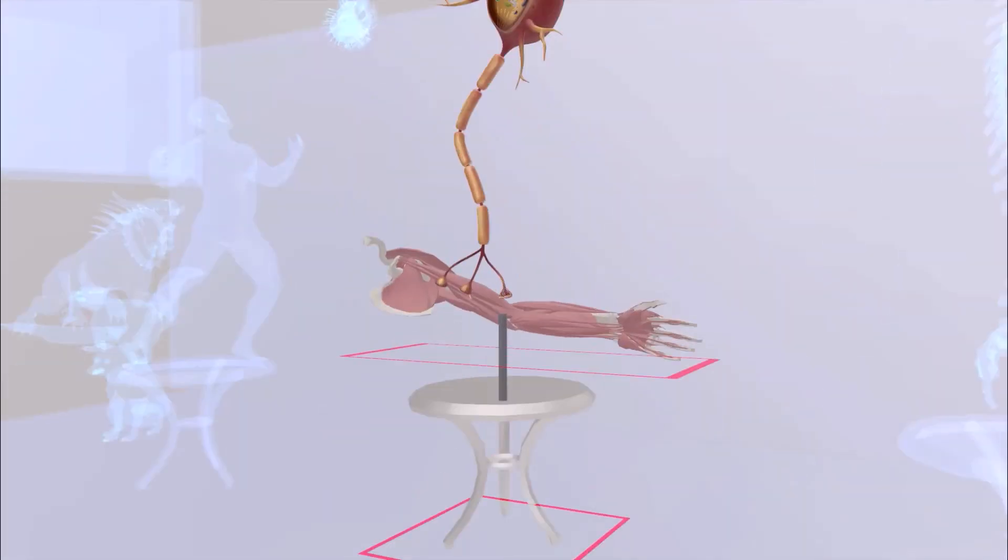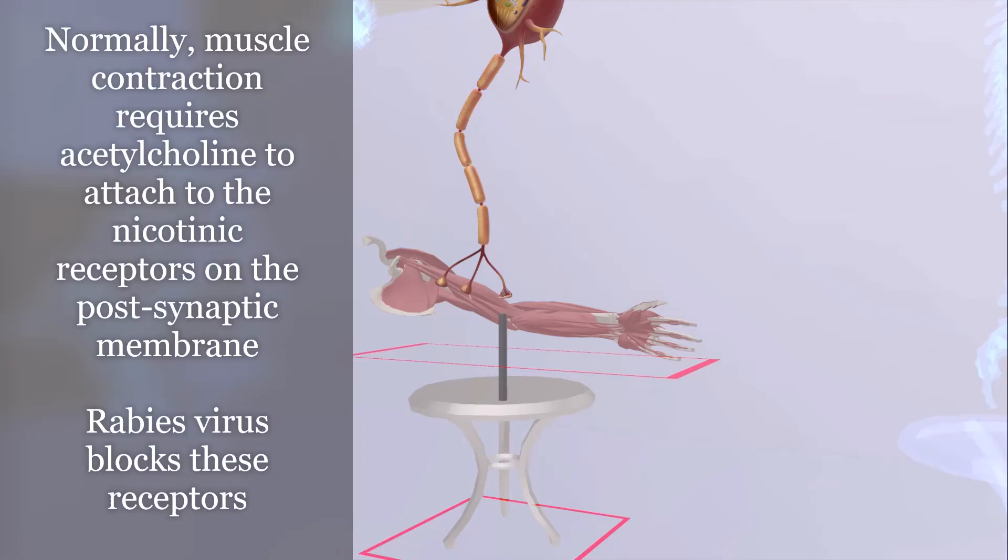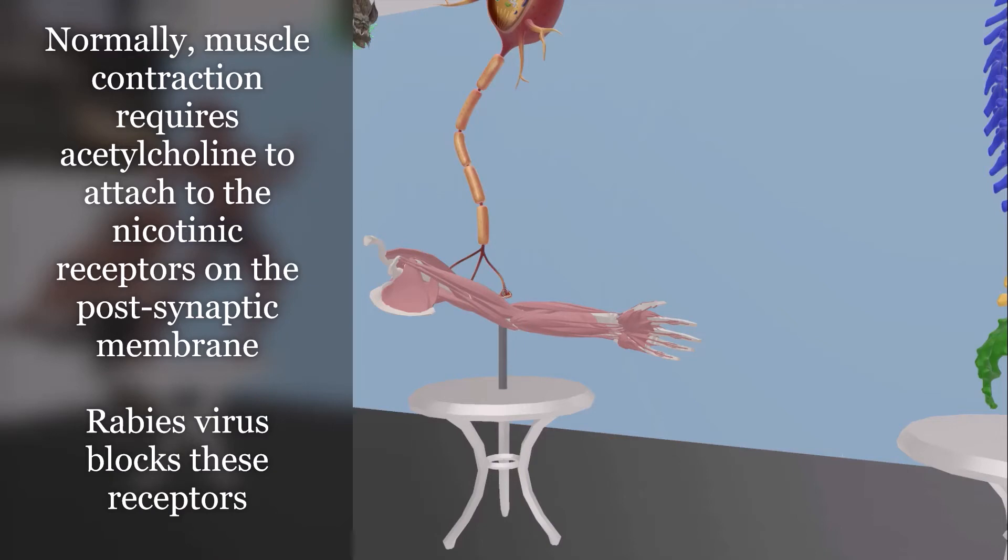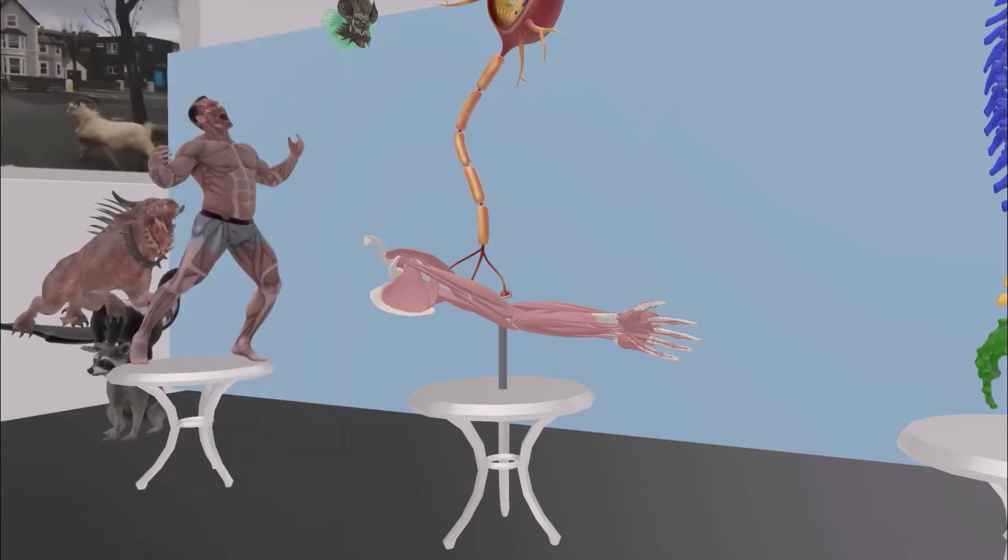So here is the nerve cell attaching to the muscle cell. Normally what happens is, for muscle contraction to happen, a nerve cell has to release acetylcholine, which attaches to nicotinic receptors on the muscle cells. What happens is that rabies virus enters and blocks the acetylcholine nicotinic receptors over here. So we can imagine our scary rabies guy coming over here and blocking these receptors.